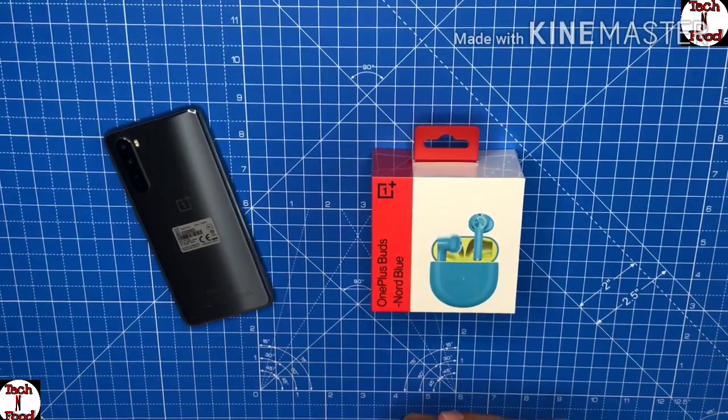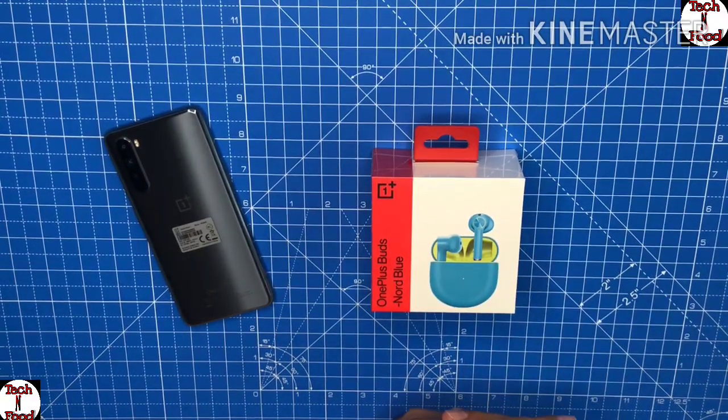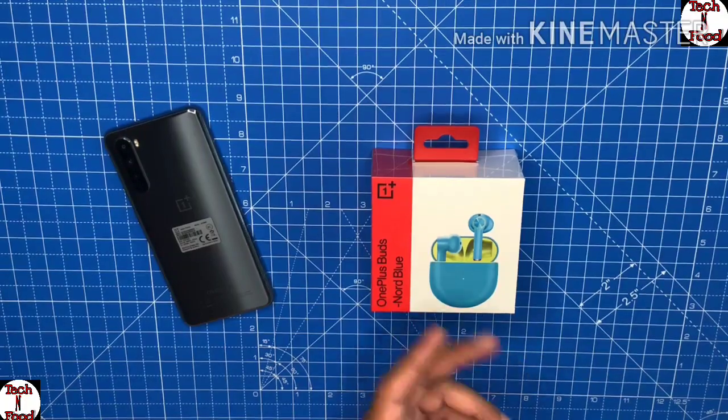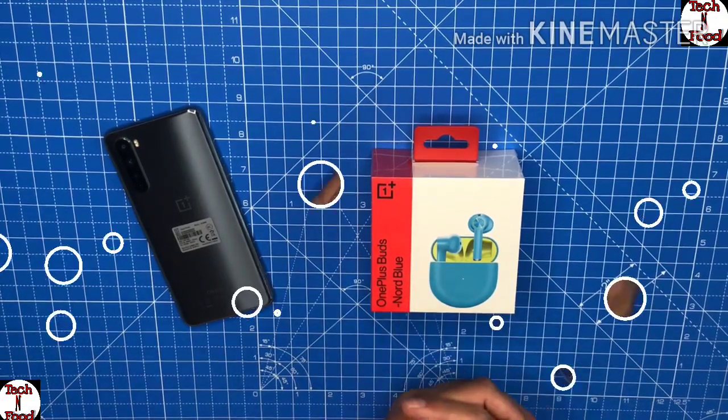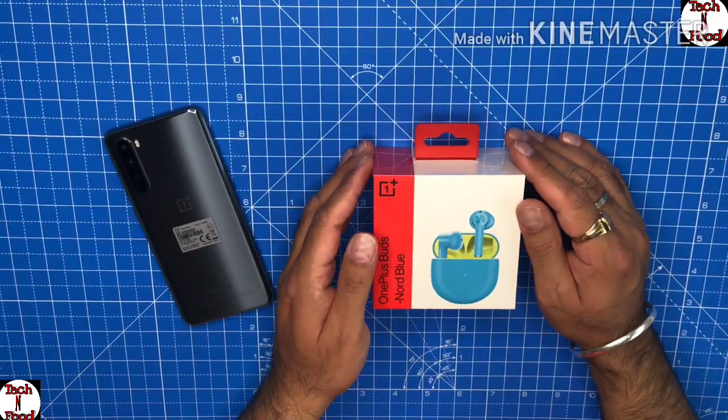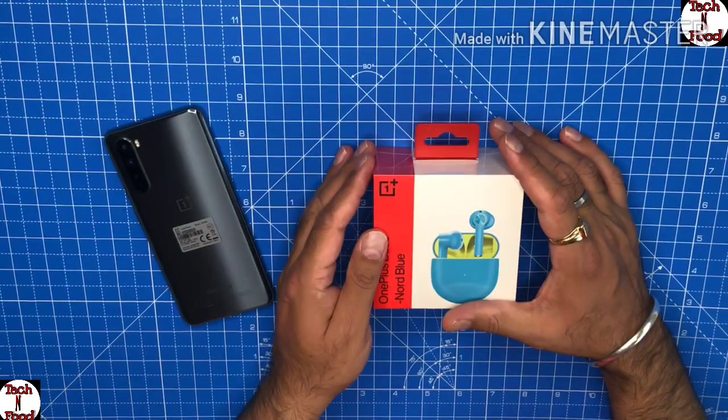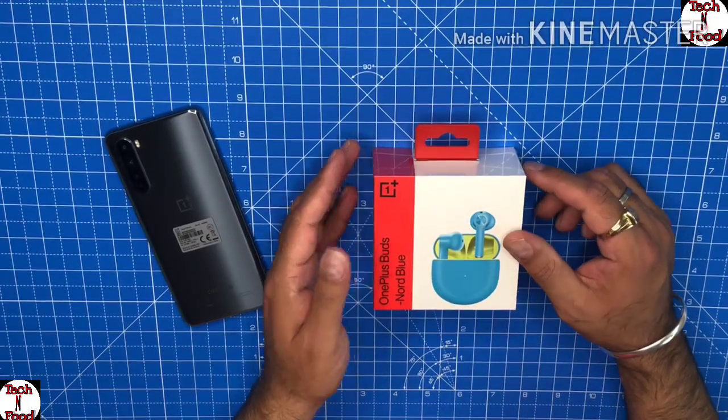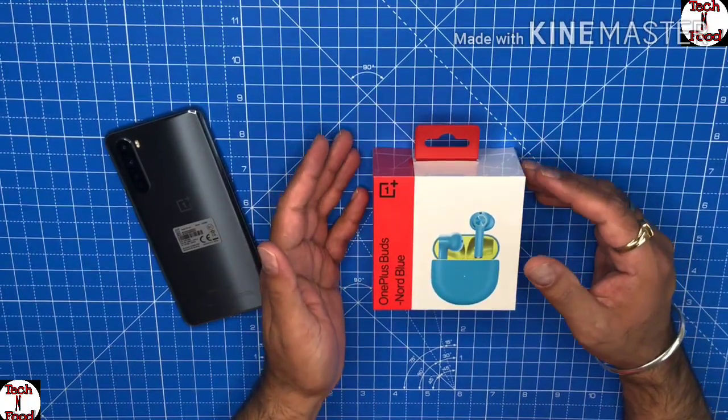OnePlus Buds, as you all know, is the buds from OnePlus which they have launched with a significantly low price, only 79 pounds here in the UK. Apple AirPods go for 159 pounds, but let's see what's the difference, how come they're so cheap, and if they're really worth it for 79 pounds or not.